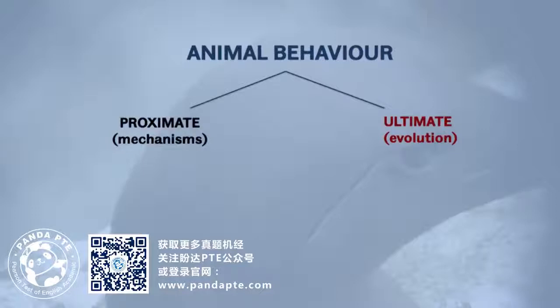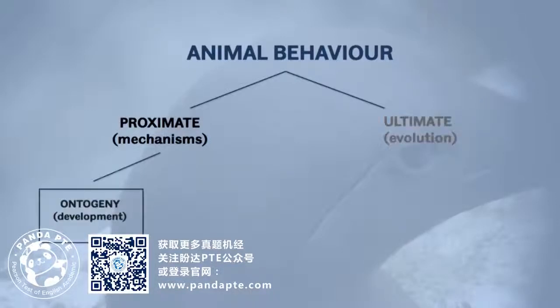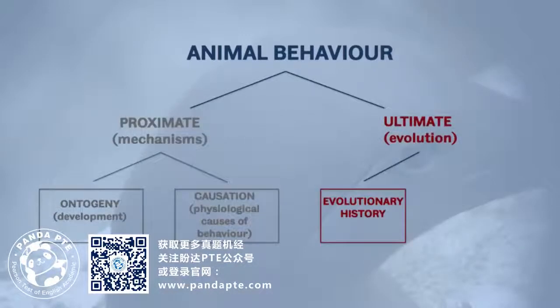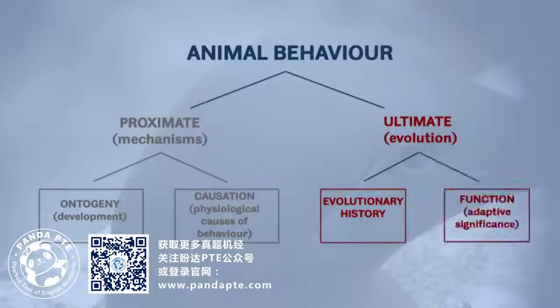We can divide the proximate and ultimate questions into two sub-questions. For proximate: how does the behaviour develop, and secondly, what causes the behaviour? For ultimate: how did the behaviour evolve, and secondly, what is the adaptive significance of the behaviour — what's its purpose?